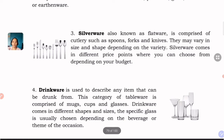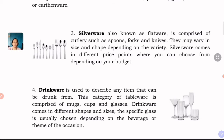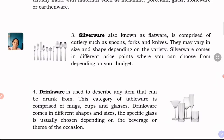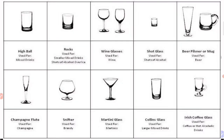Of course, prices vary — some are more expensive but there are also budget-friendly options. Number four is drinkware, used to describe any item that can be drunk from. This category includes mugs, cups, and glasses, and comes in different shapes and sizes. The specific glass is usually chosen depending on the beverage or theme of occasion — there are types of glasses for wine, brandy, and juice.